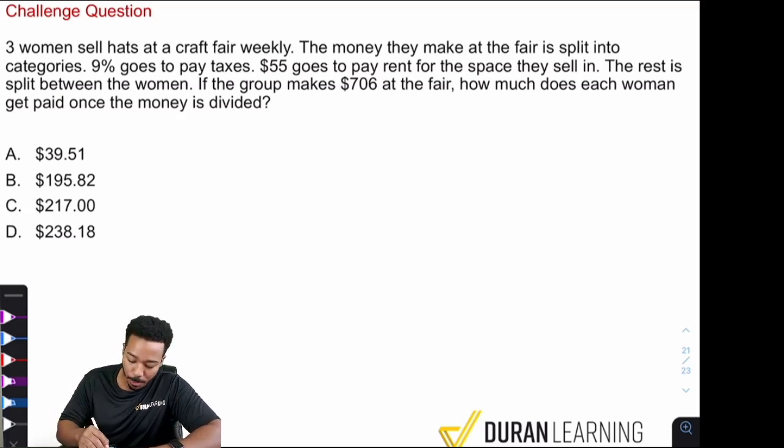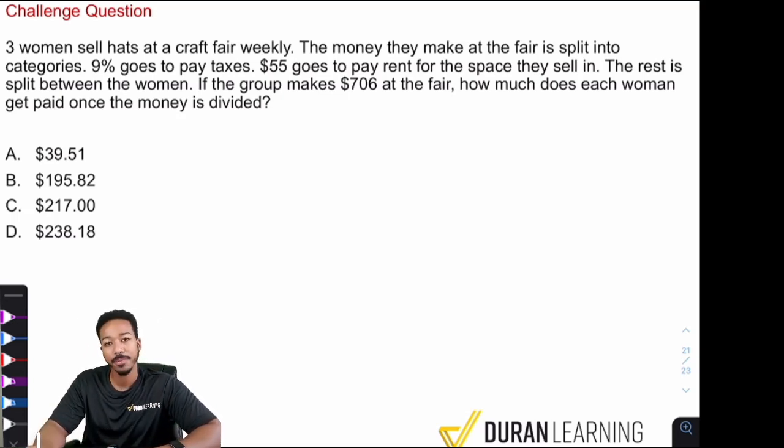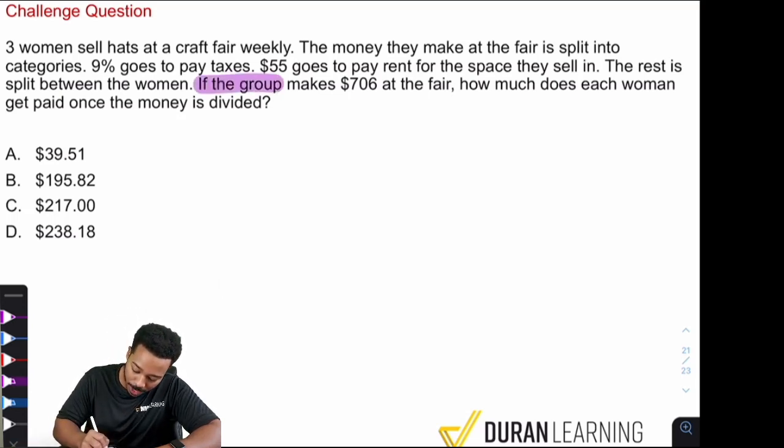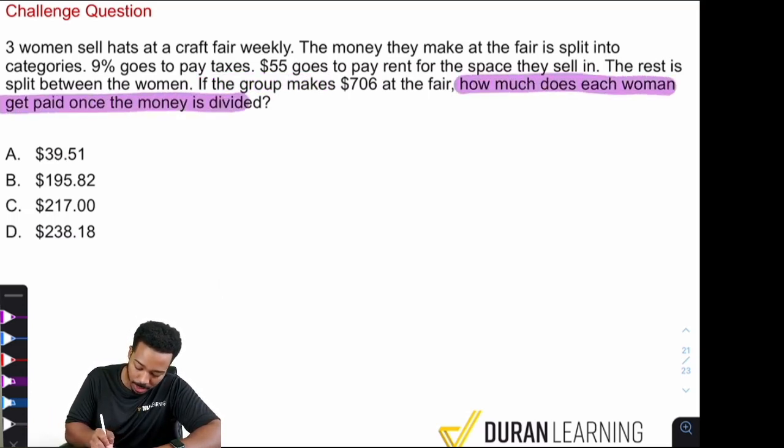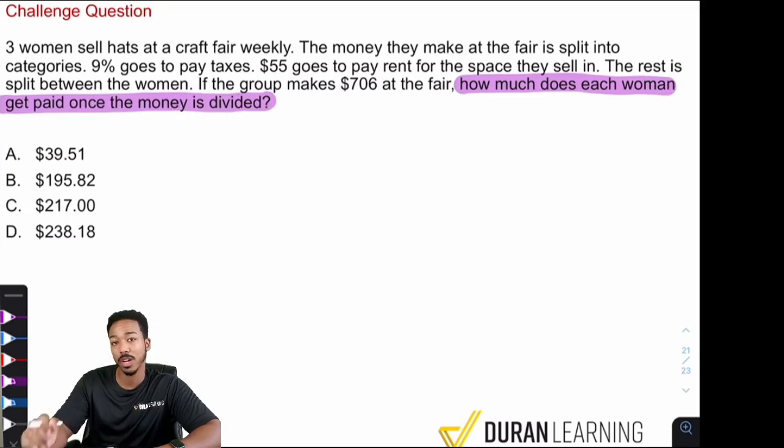So first things first, when we're doing word problems, guys, first things first, never start by reading the entire thing. Stop that. Start with the question here. That way you can give yourself the opportunity to understand what the rule is, what the objective is before you go ahead and look at all of the information. So watch this. So the question is not if the group spent. No, it's not. It's this. How much does each woman get paid once the money is divided?